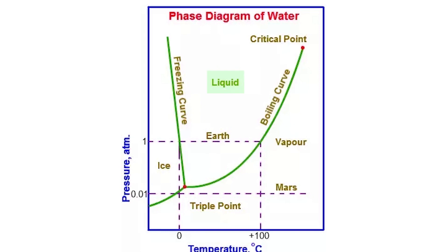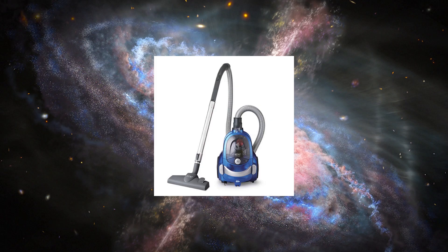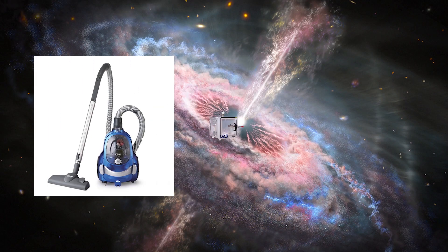At this temperature, you can see water at different stages at the same time, but here is an exception. You must be thinking that water freezes at 0 degree Celsius, then how can it boil? Here the exception comes. The triple point can only exist in vacuum or in space — not a vacuum cleaner, but a vacuum chamber.